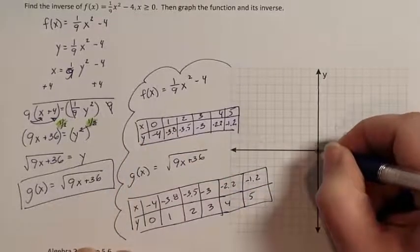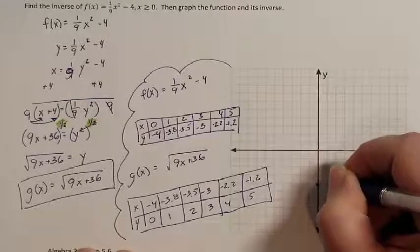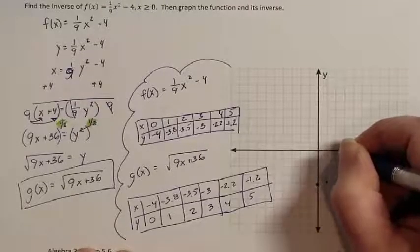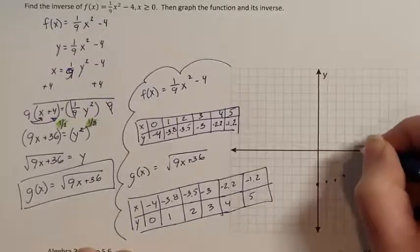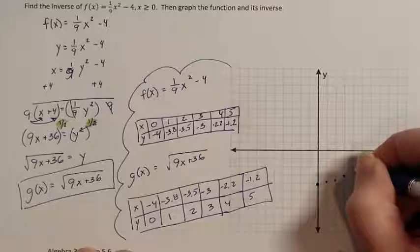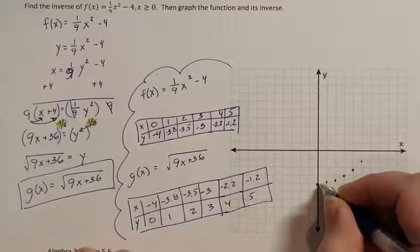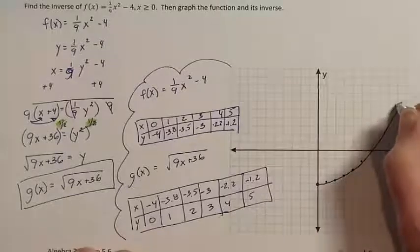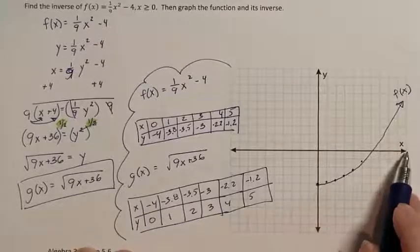So I have 0, negative 4. 1, negative 3.8. 2, negative 3.5. 3, negative 3. 4, negative 2.2. 5, negative 1.2. So this is my f of x function. Notice I got everybody on the positive x values.